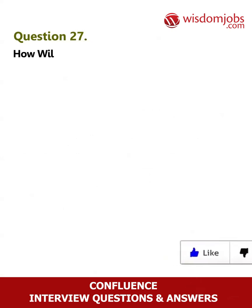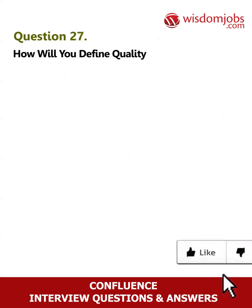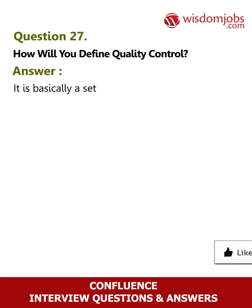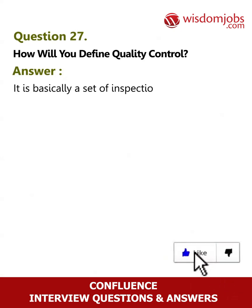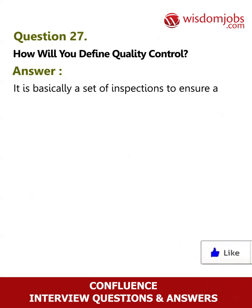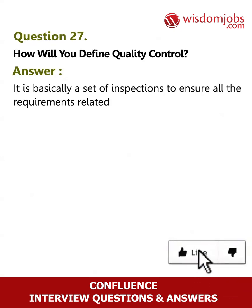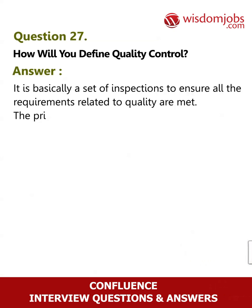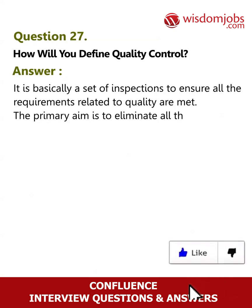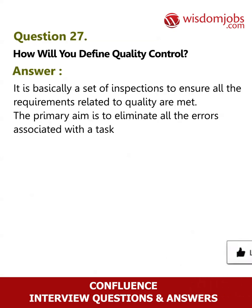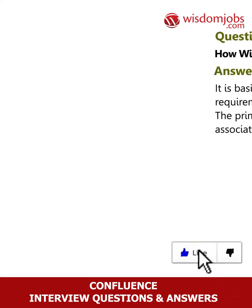Question 27: How will you define quality control? Answer: It is basically a set of inspections to ensure all the requirements related to quality are met. The primary aim is to eliminate all the errors associated with a task or a project.